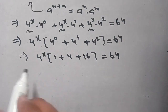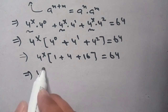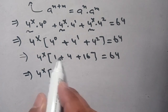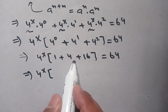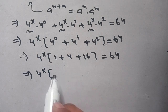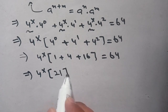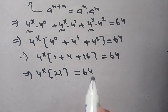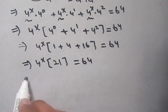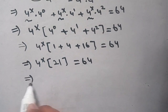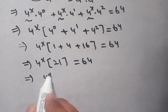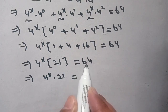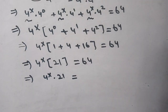Now we have 4^x times (1 plus 4 is 5, and 5 plus 16 is 21) equals 64. So we have 4^x times 21 equals 64.